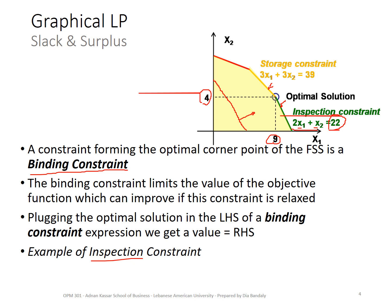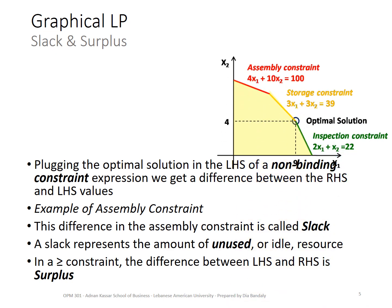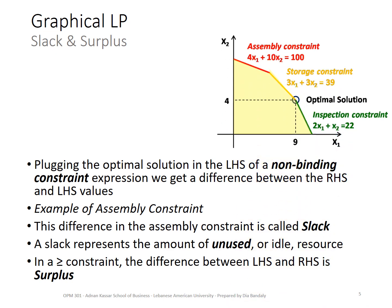If you don't have it graphically, this is how you can tell whether a constraint is binding or not: its left-hand side will equal its right-hand side. What about the other cases — the constraints that are not binding? These are non-binding constraints. In our case, the assembly constraint was non-binding, and also the non-negativity constraints were non-binding. Unlike the binding constraint, the left-hand side would not be equal to the right-hand side.